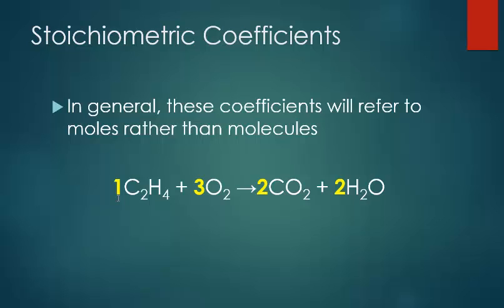Although we first learned that stoichiometric coefficients refer to molecules or formula units, from this point on we're going to look at them as moles rather than molecules, because it's a much more practical way to talk about chemical reactions. We really cannot isolate 1, 2, 3, or even a million molecules, but we can isolate a mole of a molecule. So from now on, these stoichiometric coefficients are going to refer to moles.